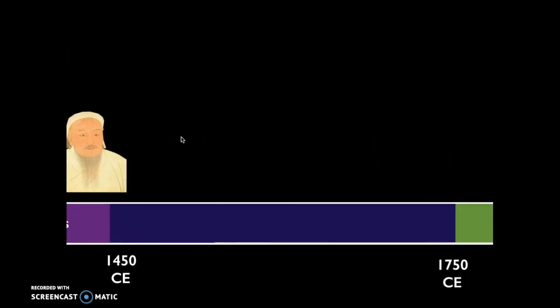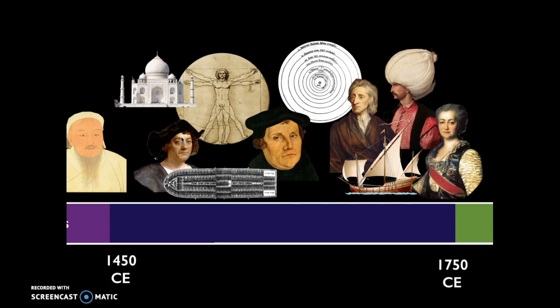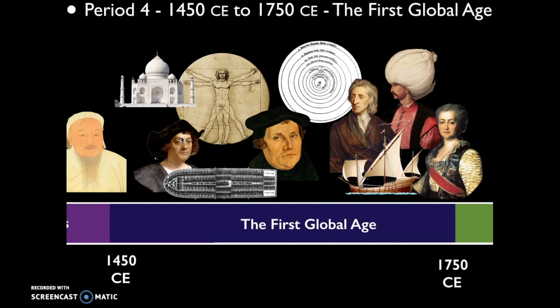Once we reach 1450 CE, we'll start to see increased hemispheric interactions — the first global age, where people are beginning to come together on a worldwide scale. During this period we'll talk about the conquest and colonization of the Americas by Europeans, the formation of empires like the Safavids, the Mughals, and the Ottomans, and the beginnings of Russia. We'll also talk about major transformations beginning in Europe: the Enlightenment, the Scientific Revolution, the Protestant Reformation, and the Renaissance. This represents about 20% of the AP test — the first global age.